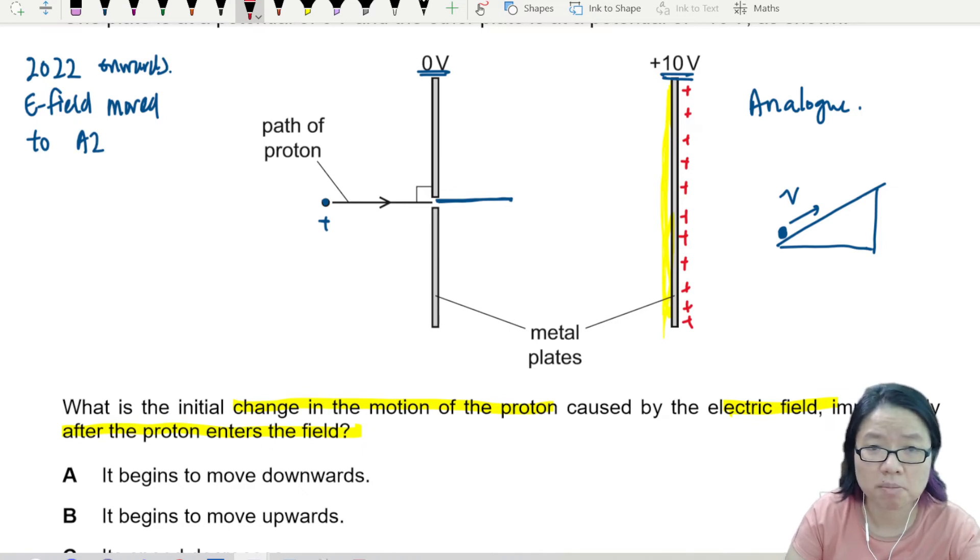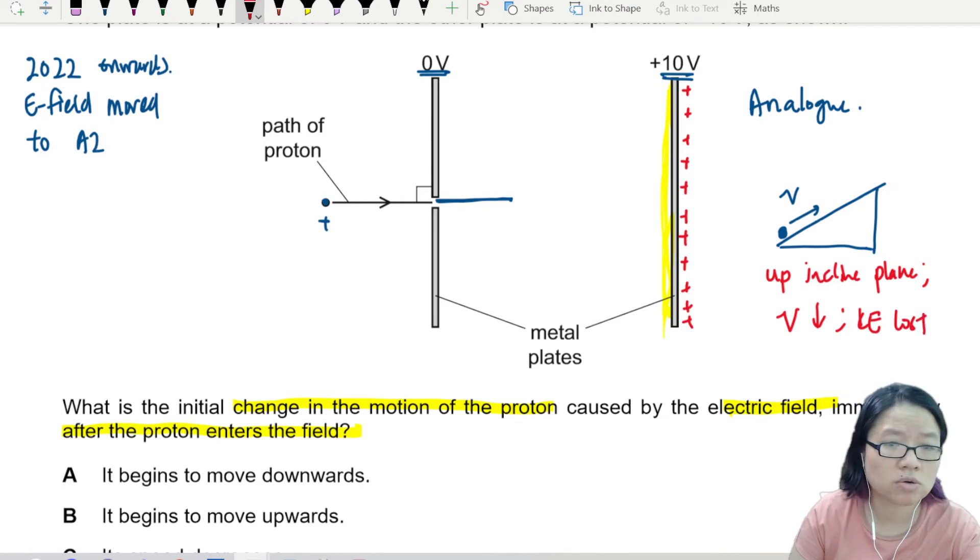But whatever it is, as the ball rolls up the inclined plane, up the inclined plane, the speed decreases because KE is lost.